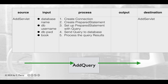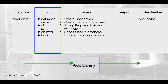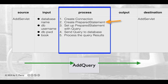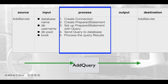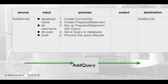Here's our input-process-output table for our AddQuery class. This class is important as it will be called by the add servlet. The add servlet will provide the database name, username, and password, plus a book object used by AddQuery to get the information to add to the database. To process this, we'll create a connection, create a prepared statement, set it up with a query and the data to fill in the query, send it to the database, and process the query results if any. There will be no output as we go back to the add servlet.